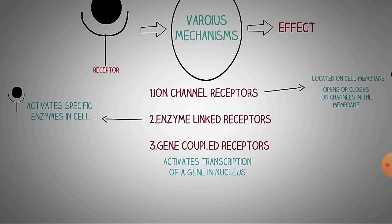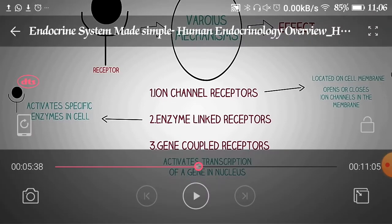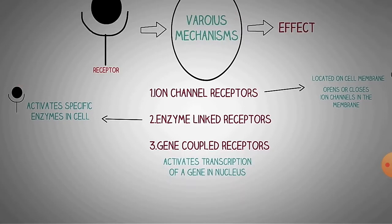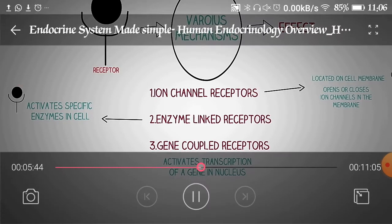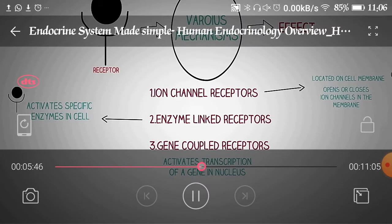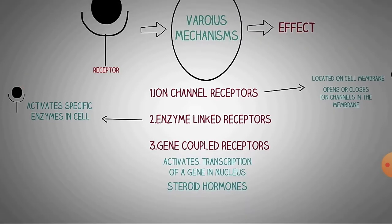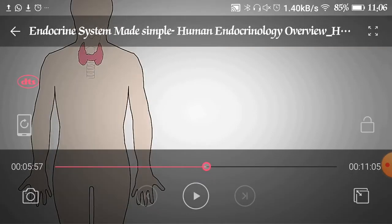The third type is the gene-coupled receptor, where activation and transcription of the gene in the nucleus occurs. This is actually the gene expression receptor, in which gene expression occurs. These are steroidal receptors — steroidal hormones such as testosterone and progesterone work by this mechanism.